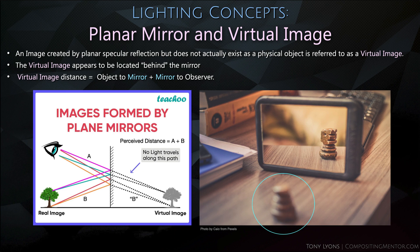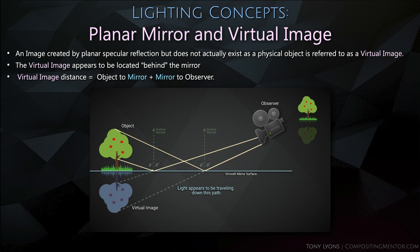A virtual image is one created by a planar specular reflection that does not actually exist as a physical object; it appears to be located behind the mirror. The virtual image distance equals the object-to-mirror distance plus the mirror-to-observer distance. An interesting example: a chess piece is out of focus in the foreground, but its reflection in the mirror appears in focus, because the virtual image distance behind the mirror puts it within the focal range — the lens optically respects that virtual distance and gives the correct depth of field.